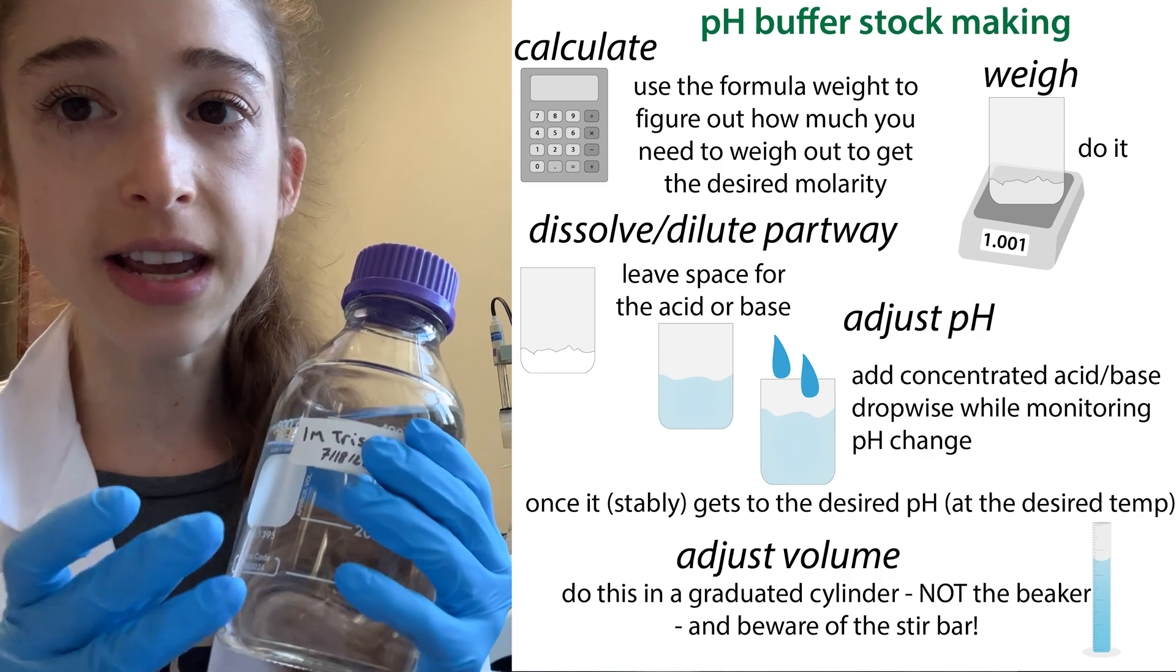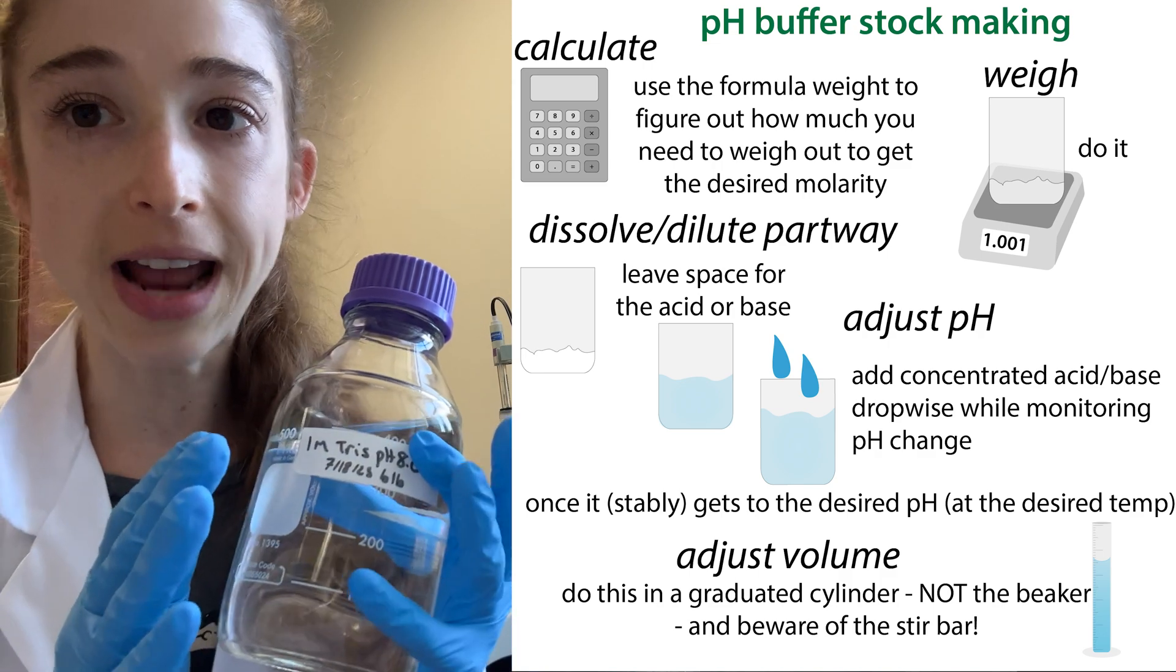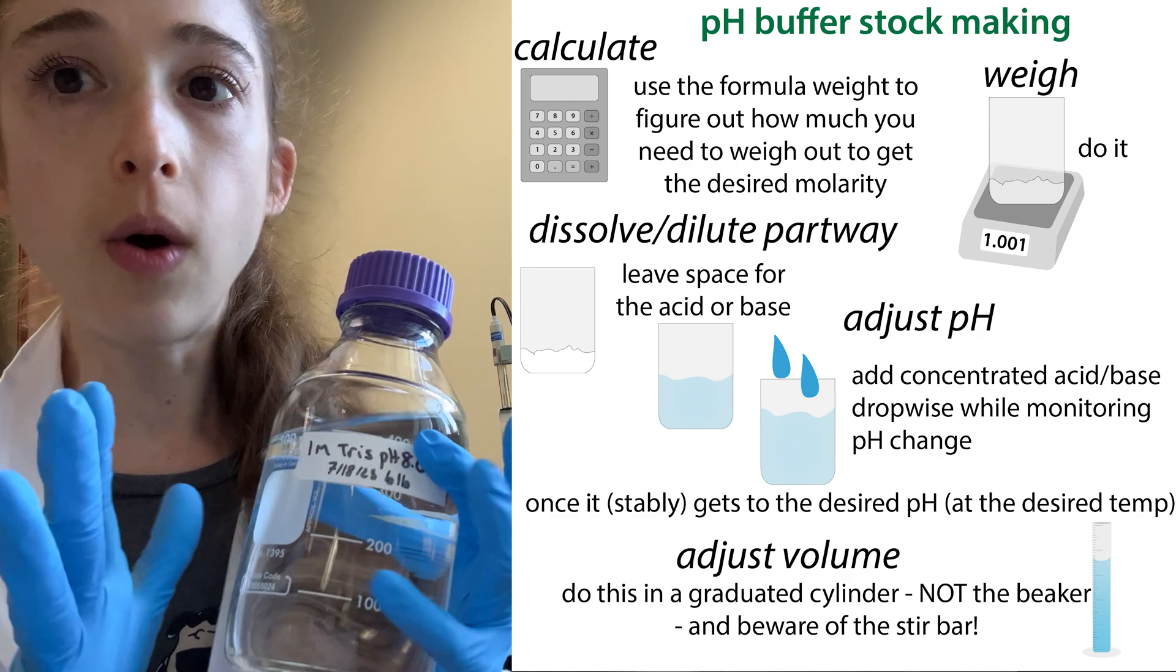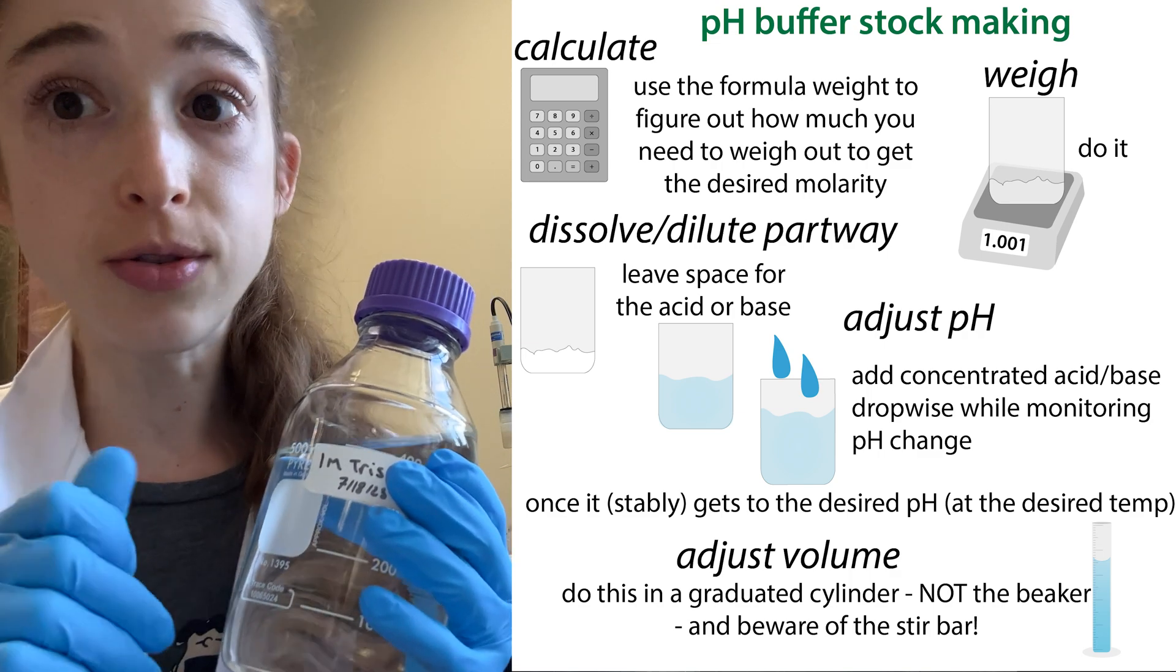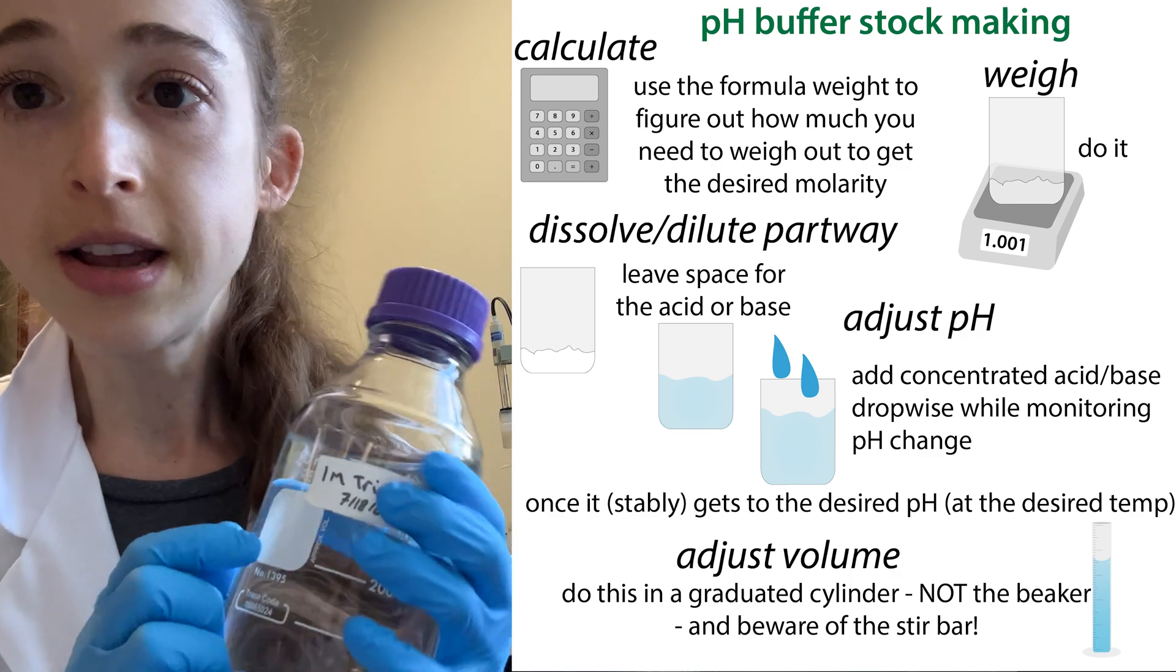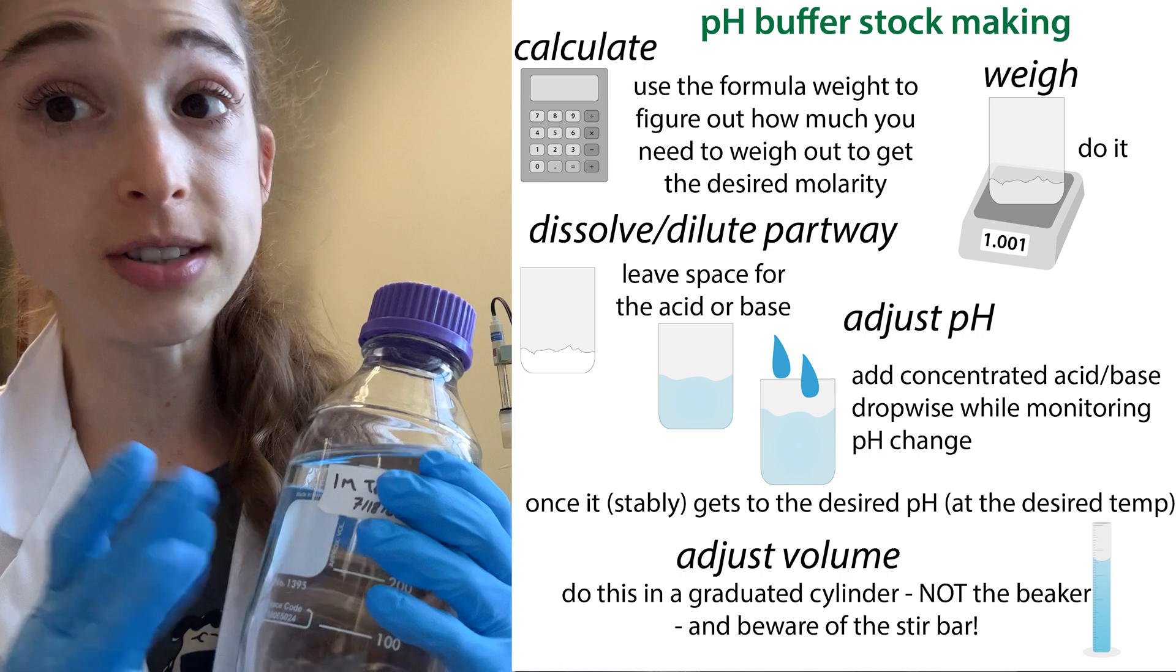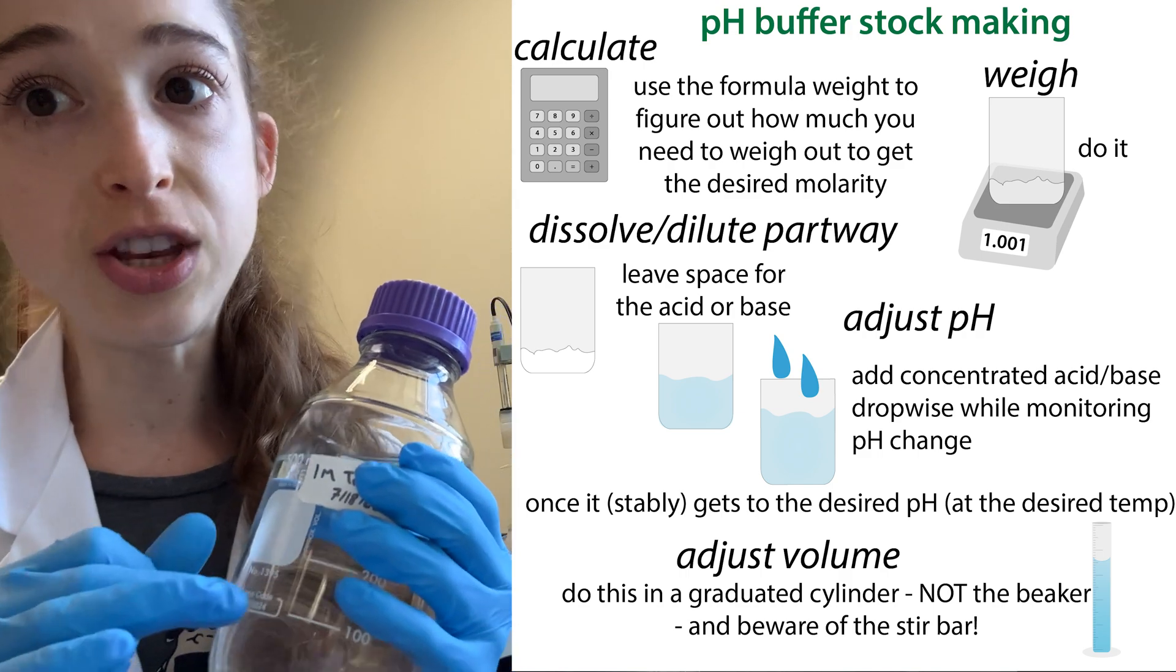Typically, what you're doing is you're adjusting it with something like one molar hydrochloric acid or one molar NaOH or KOH. You don't want to really mix salts. So if you're using sodium in your buffer, then you would use NaOH. And if you're using potassium in your buffer, then you would use KOH.